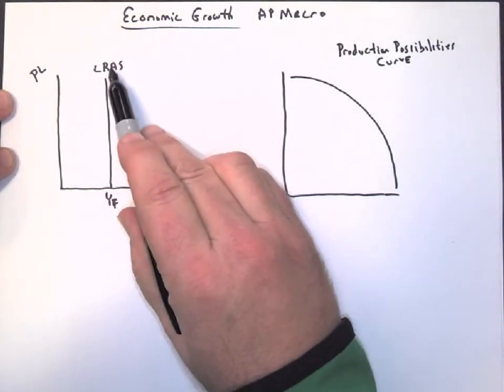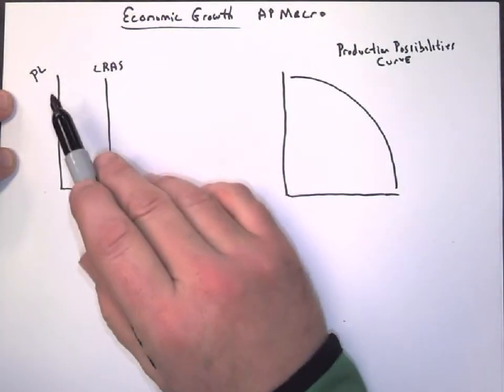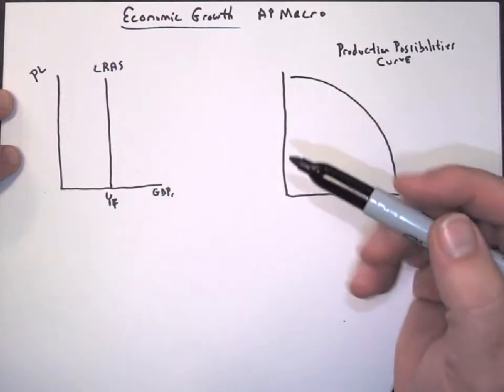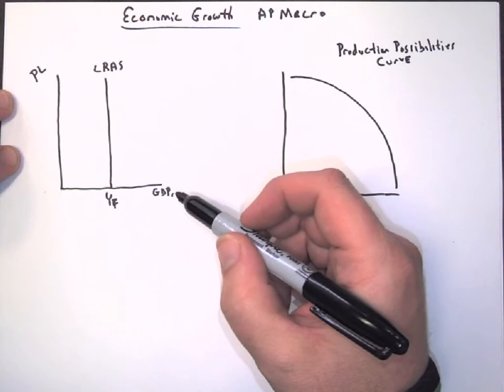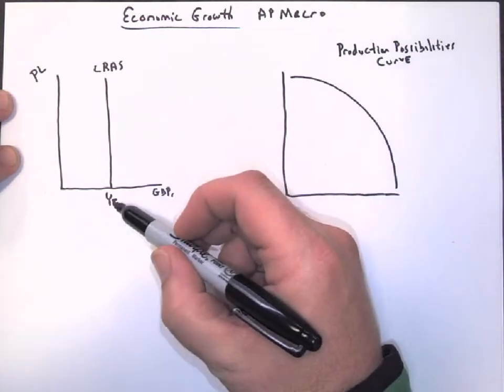This is long-run aggregate supply. The vertical label is price level, and this is GDPR. That's real gross domestic product, and YF is full employment.